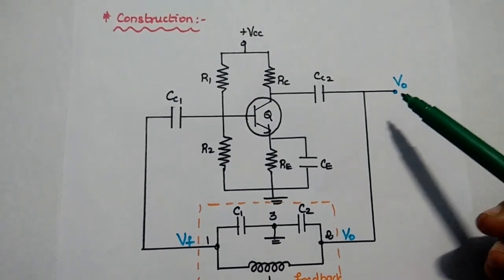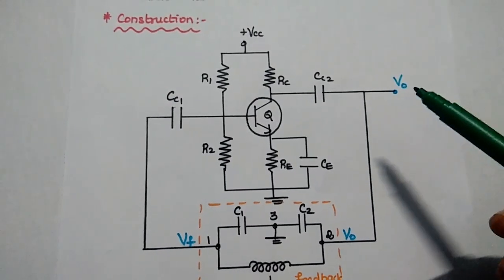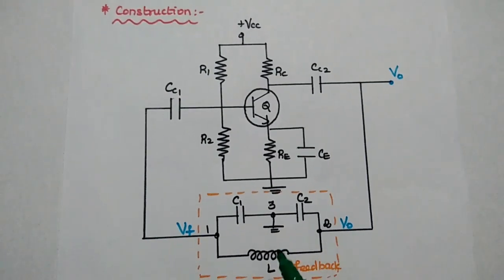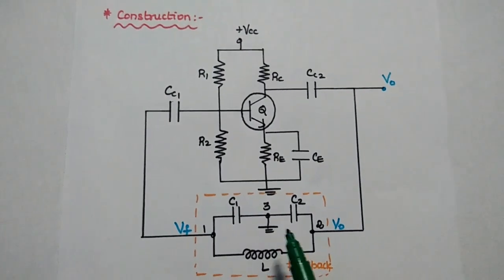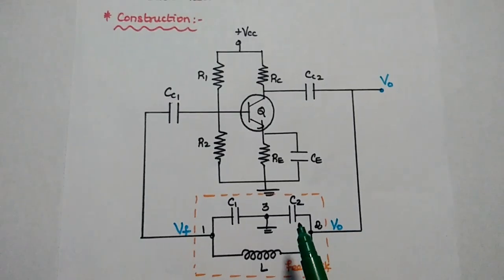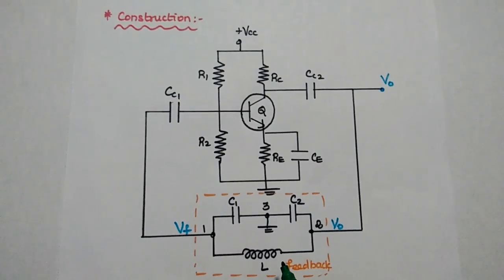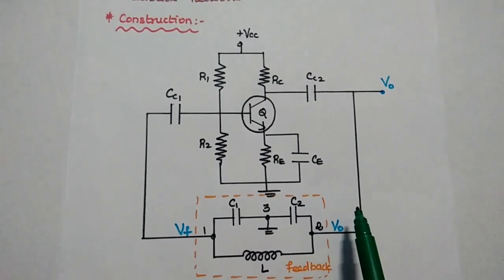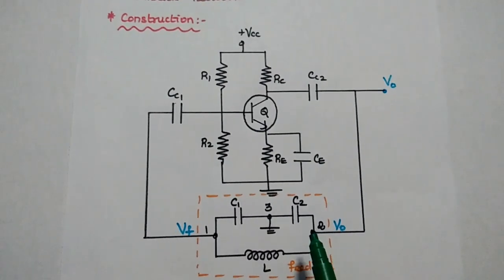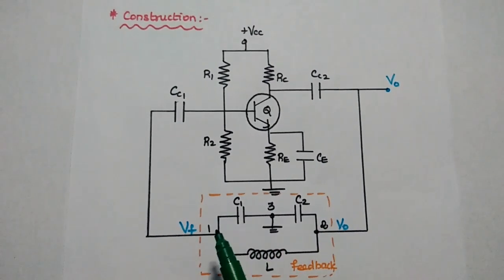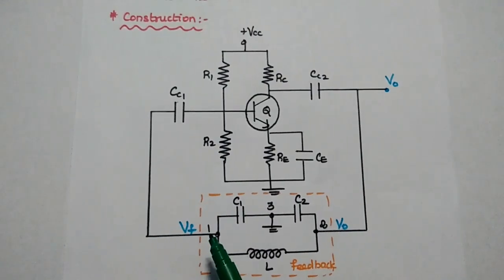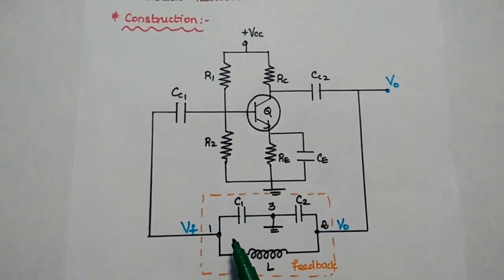The output of the amplifier circuit is given as input to the feedback network. The feedback network consists of two capacitors, C1 and C2, and one inductor L. The output VO is given at capacitor C2, and the feedback signal is taken as the output across C1.